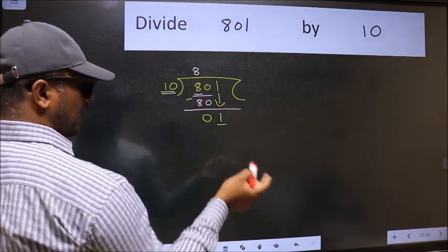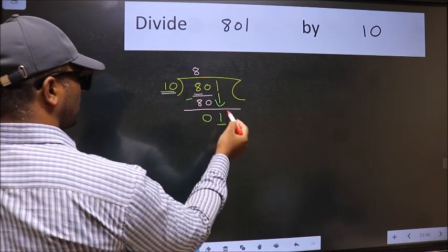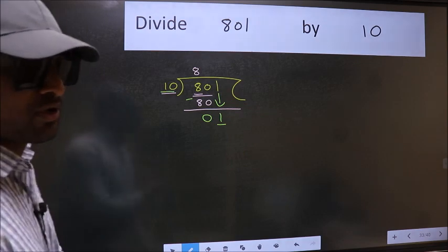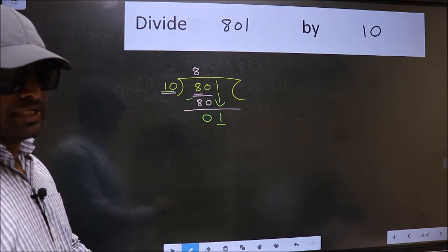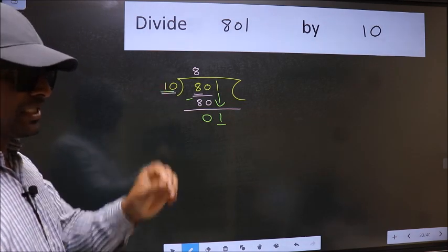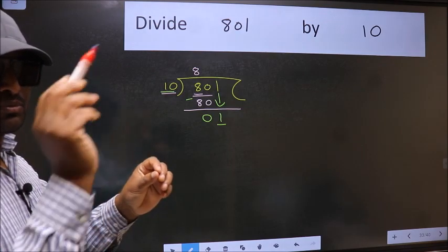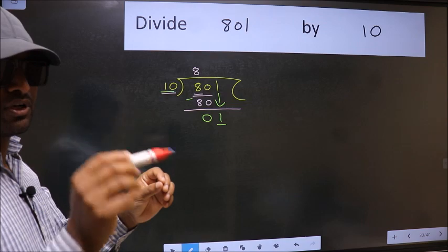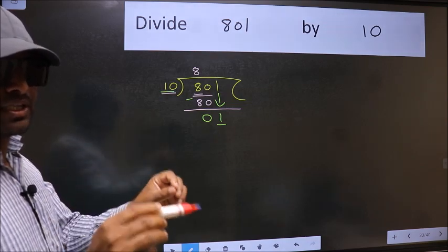And in the same step, you want to put dot, take 0, which is wrong. I repeat: bring down the number and also put dot, take 0 - both at the same step, you should not do.